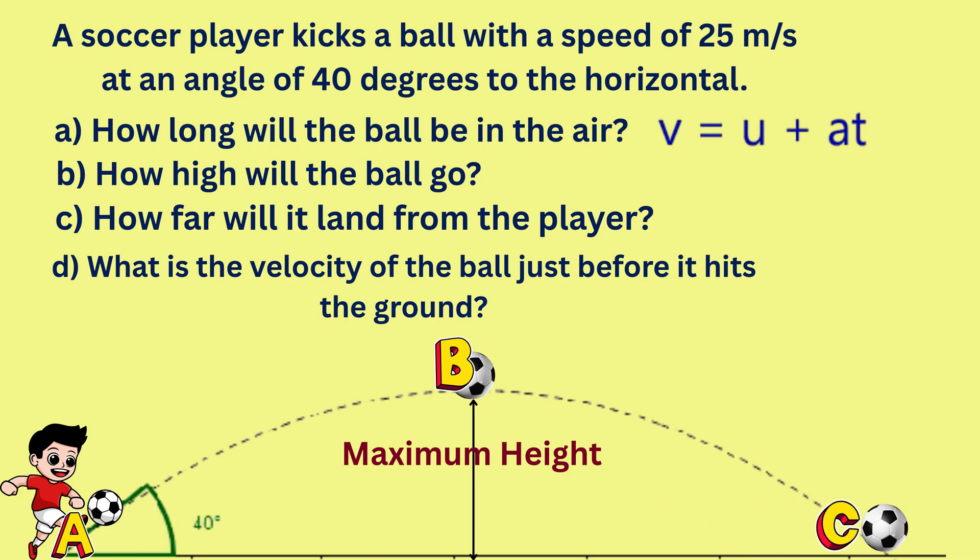We will first analyze the flight of the ball from point A to point B. Also, since the ball was launched at an angle, the motion has two components: a vertical component and a horizontal component. We are analyzing its flight to the maximum height, so we will focus on the vertical component of the ball's motion.